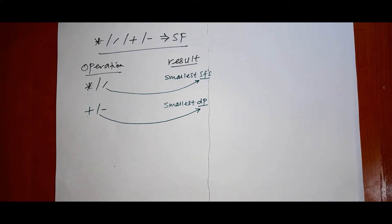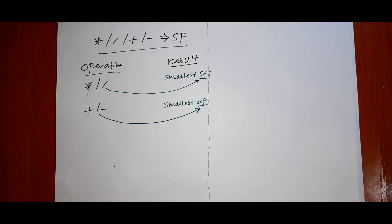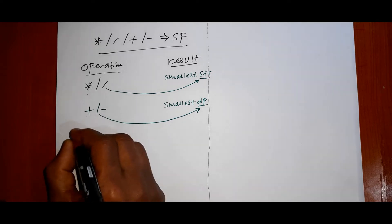Consider: for addition and subtraction you look at decimal places (DP), not significant figures. You need to allow the decimal place of the number with the minimum decimal places to determine your answer.